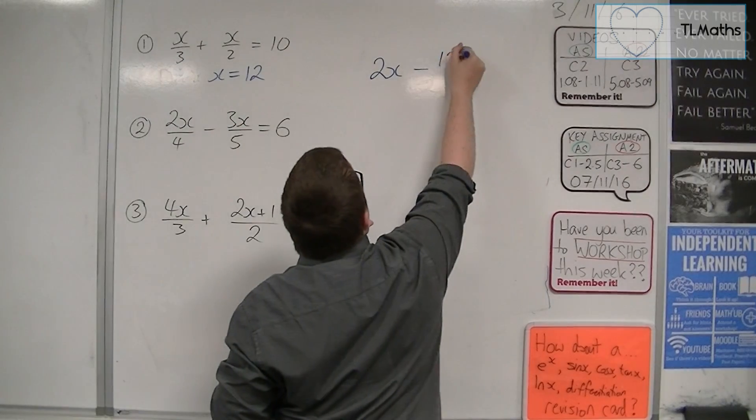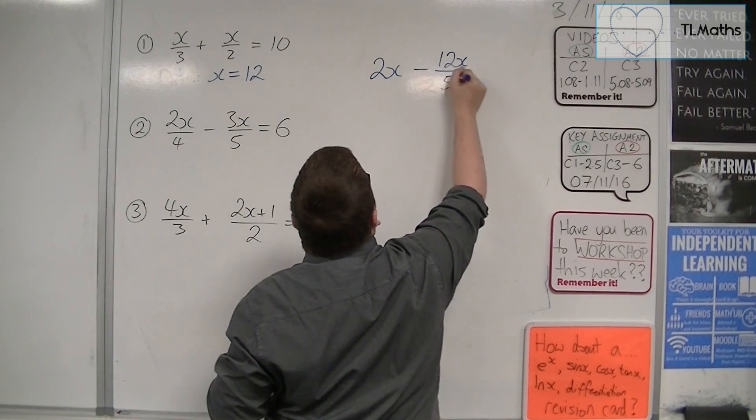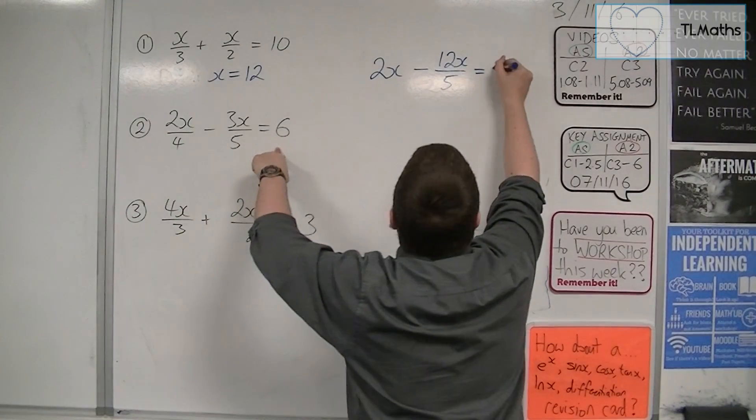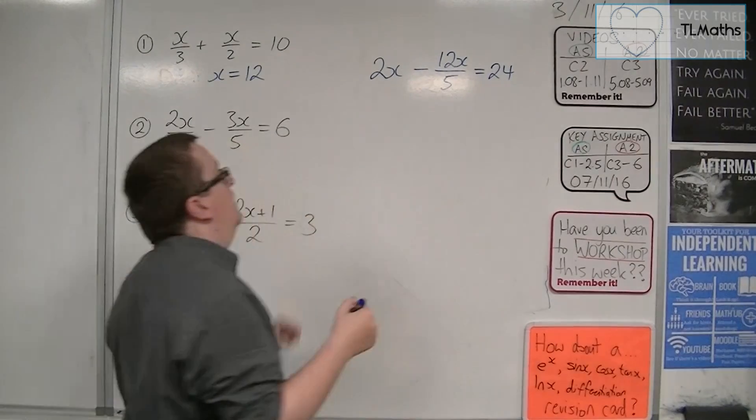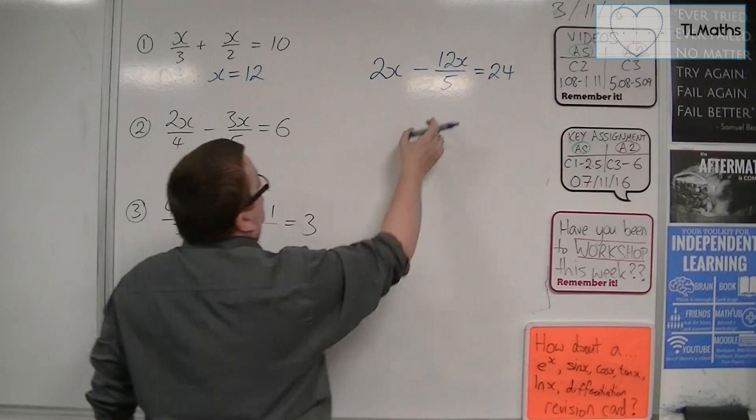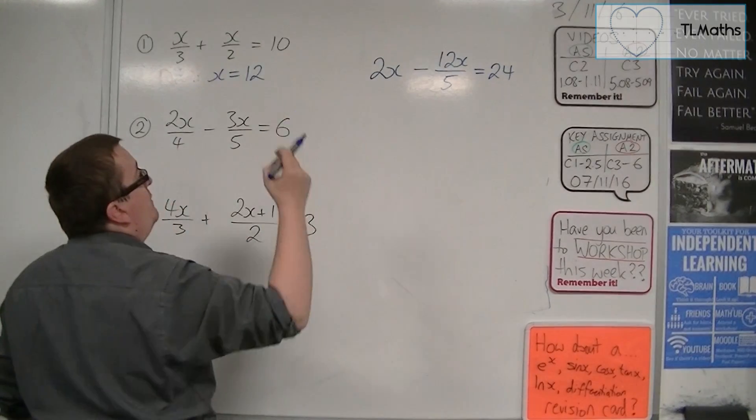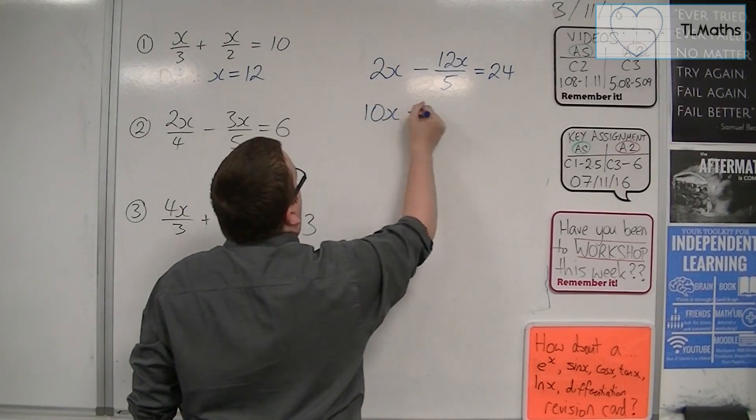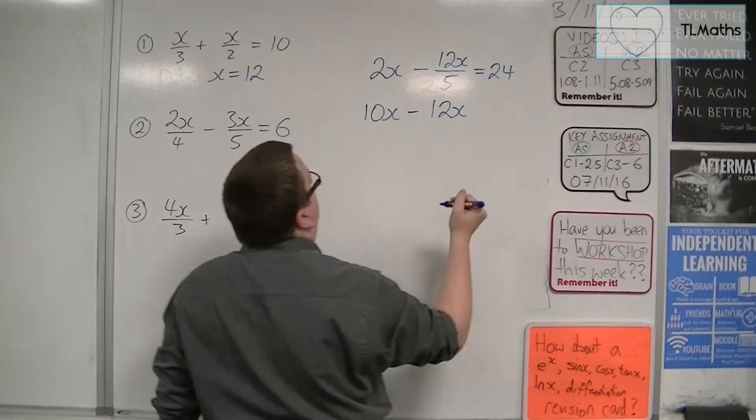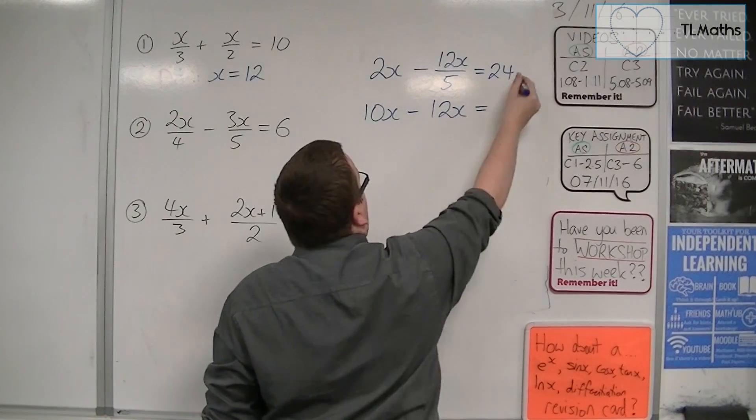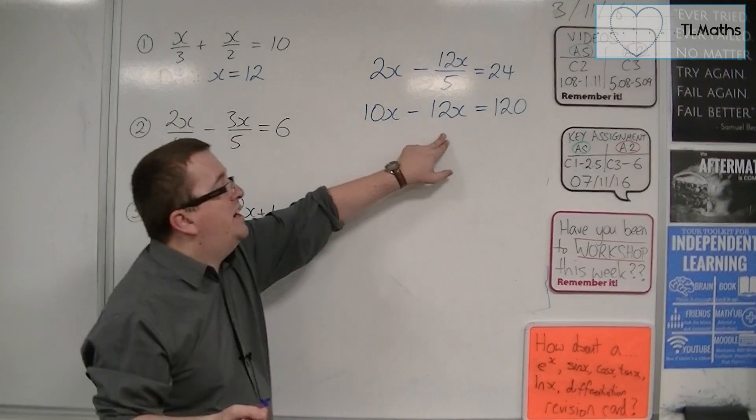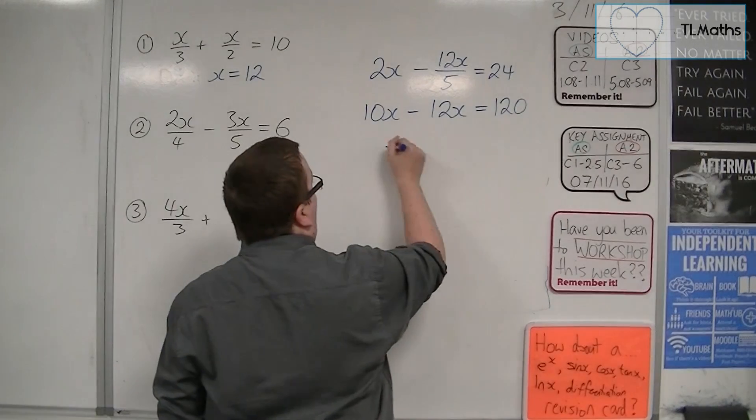So I get minus 12x over 5. And I've got to multiply the 6 by the 4 as well. So 4 times 6 is 24. I've got one fraction remaining, so I'm going to multiply everything by 5 now. So I'm going to get 10x, I'm going to be left with 12x there, and then multiplying by 5, I'm going to have 120.